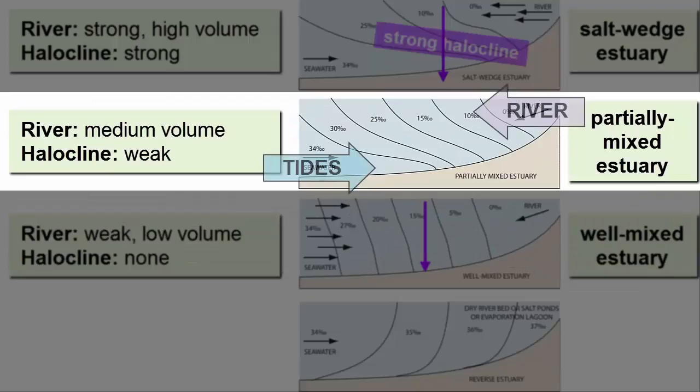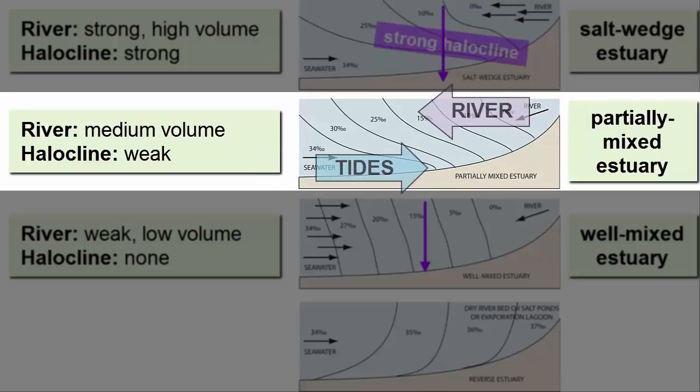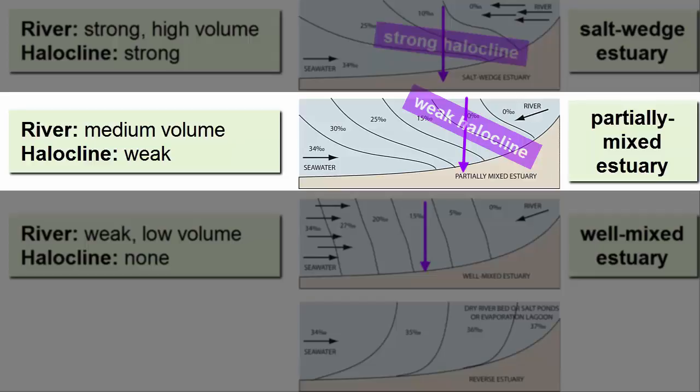In between the two, we have a partially mixed estuary. This happens when the river's volume is moderate and more closely matched by tidal currents. There's a bit of a wedge and a bit of mixing. Surface waters are fresher than deep waters, but not by the same amount as in a salt wedge estuary. A halocline exists, but it's weaker.